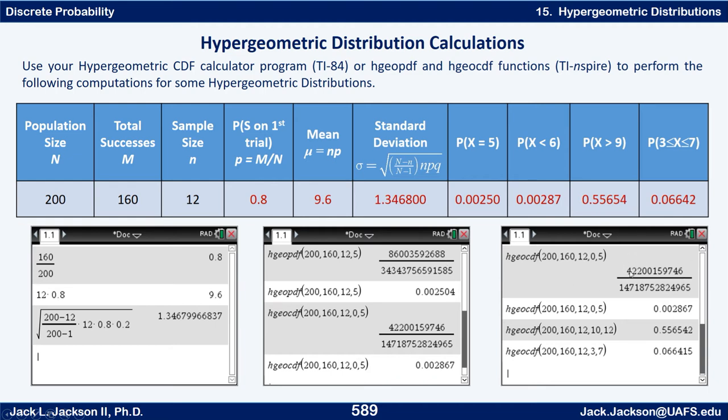And again it'll give an exact value but also a decimal if you do control enter. So eventually I got to where I just did control enter and skipped over the fraction versions because the decimal is more useful in this case. And so we figured all these out.